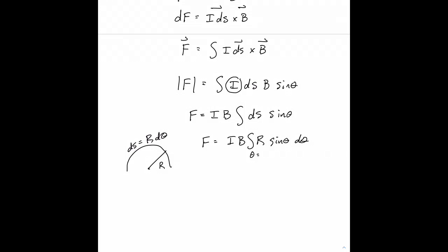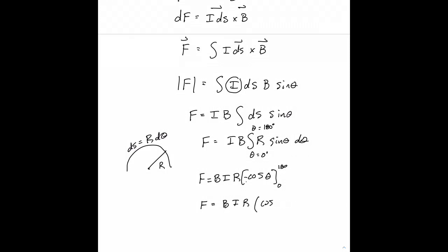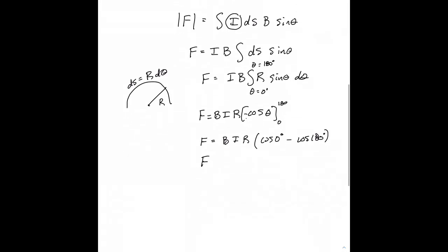The limits of integration go from theta equals 0 degrees to theta equals 180 degrees. So F equals BIR times the integral of sine theta, which gives negative cosine theta. Switching the limits to remove the negative sign, we get F equals BIR times cosine of zero minus cosine of 180. That gives BIR times 1 minus negative 1, which is 1 plus 1. So the force is equal to 2 times BIR.